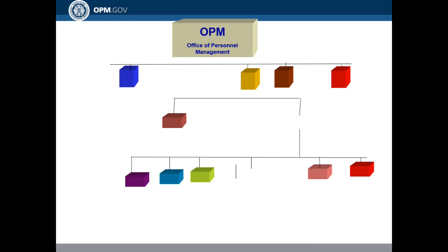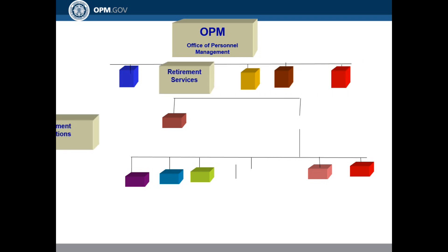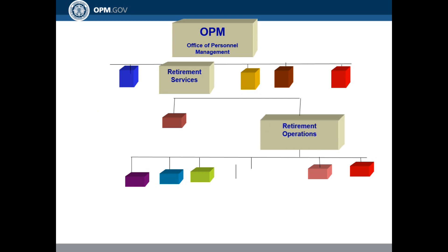Where we are on the OPM Organization Agency chart: OPM — Office of Personnel Management — Retirement Services, Retirement Operations, and here we are: RES, Retirement Eligibility and Services.